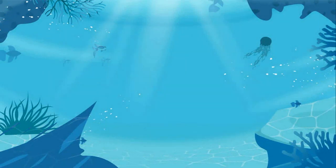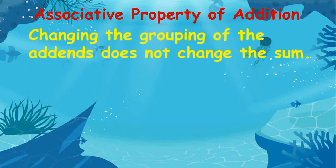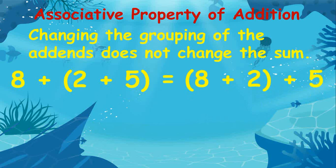Another property is the associative property. Starting with addition, it states that changing the grouping of the addends does not change the sum. For example, 8 plus (2 plus 5), where 2 plus 5 are grouped, and on the right side (8 plus 2) plus 5, where 8 plus 2 are grouped — both equations have an answer of 15.